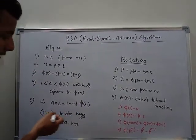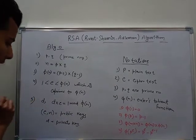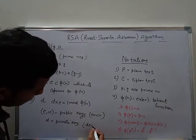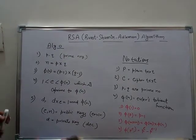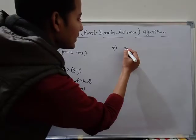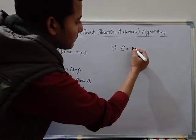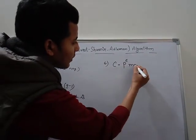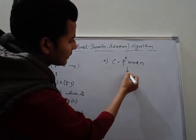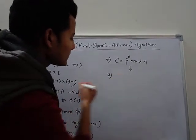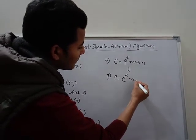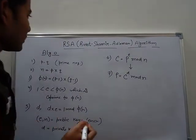The public key is used for encryption, and the private key is used for decryption. We calculate the ciphertext equal to the plaintext to the power E mod N. This ciphertext is sent to the receiver, and then the receiver calculates the plaintext by C to the power D mod N. This is the complete RSA algorithm.